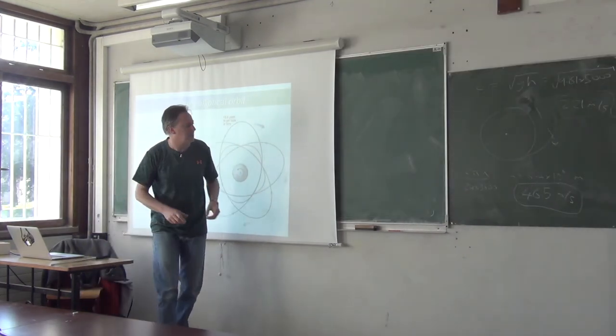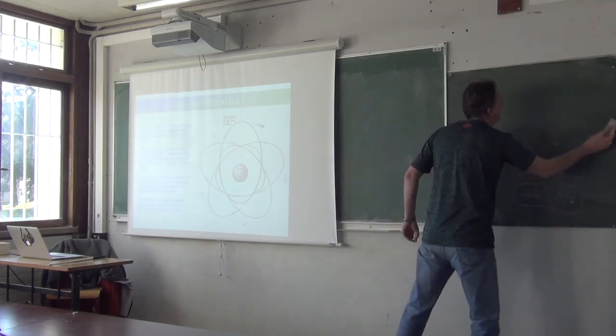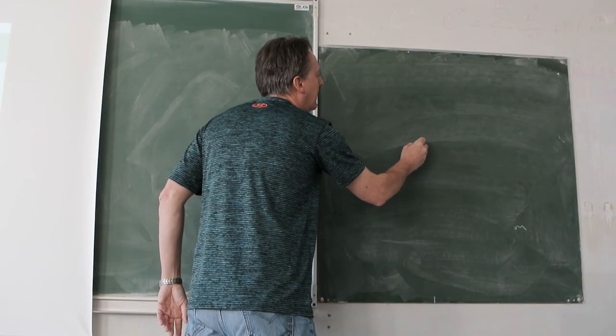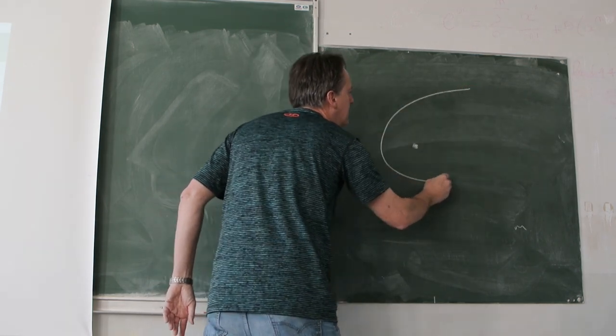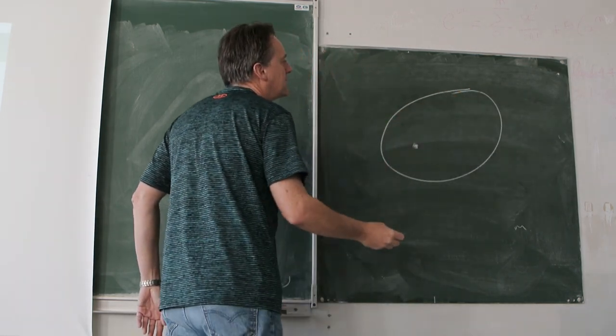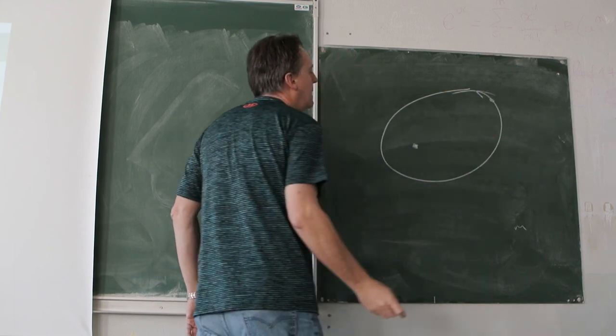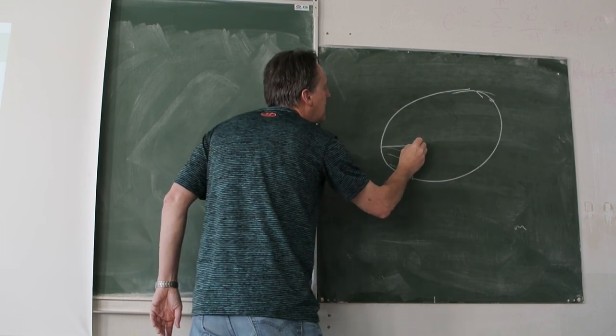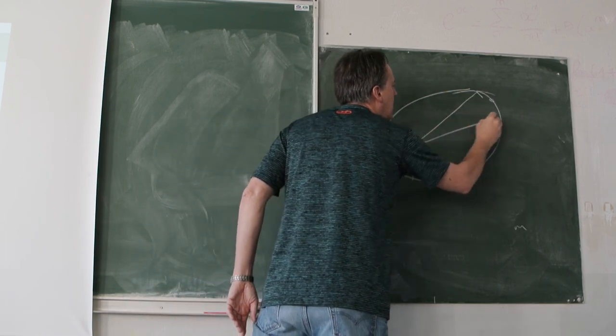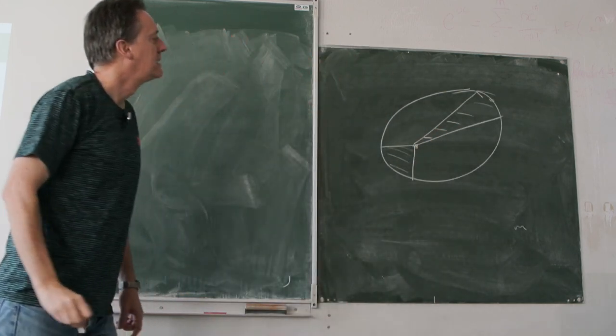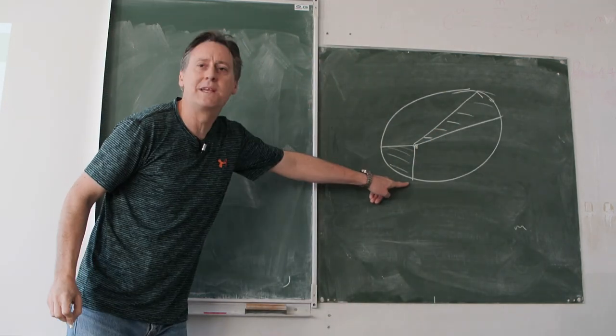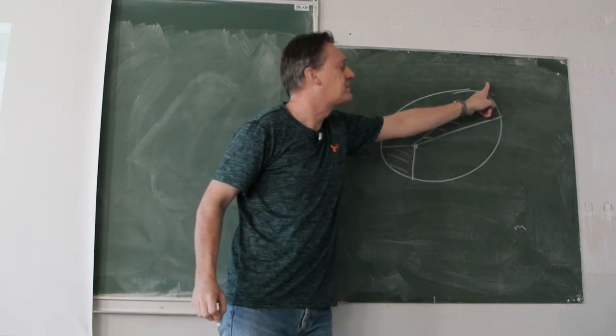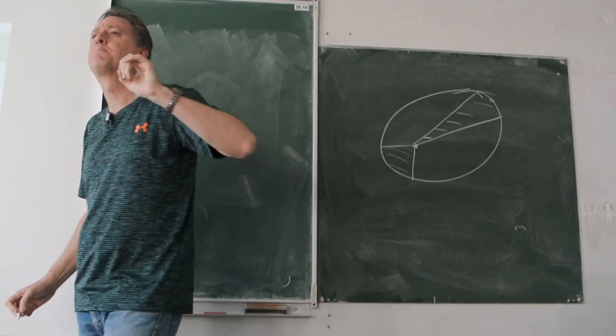So here we have to use Kepler's law of equal areas. If you have, here's the Earth. And you have an elliptical orbit. And so the moon, here's the moon going around the Earth. It will sweep out equal areas in equal times. So it's going faster when it's closer so that it can sweep out the same area slower when it's further away. So that will change the tidal period.